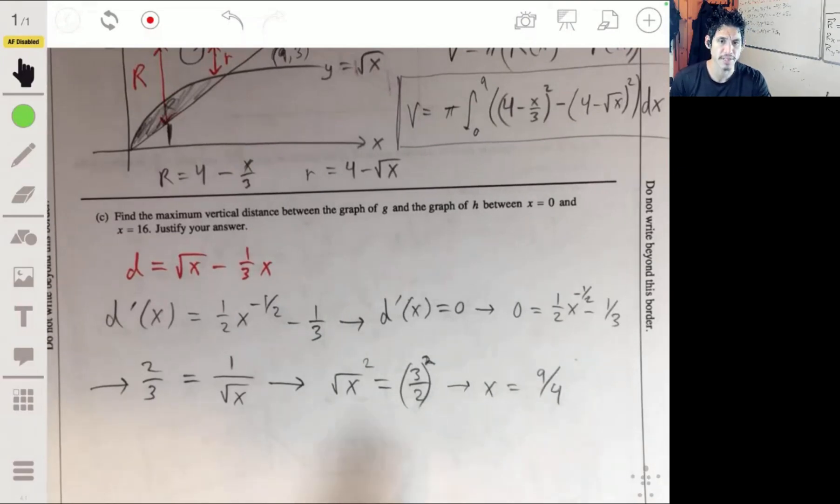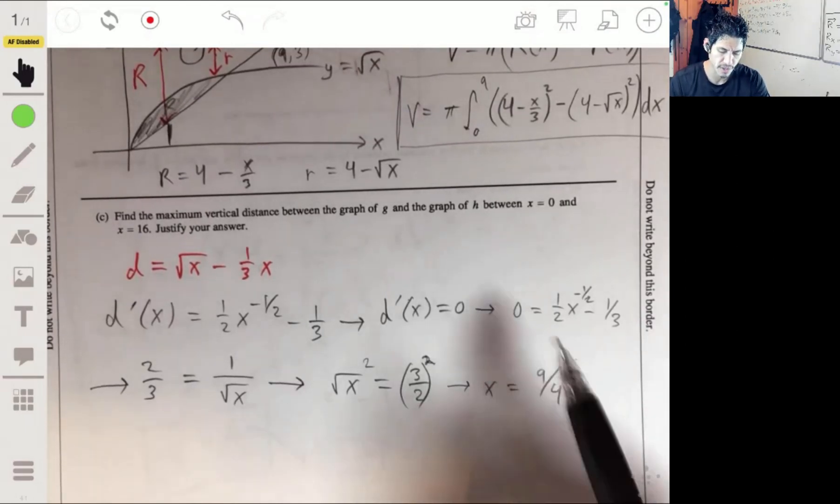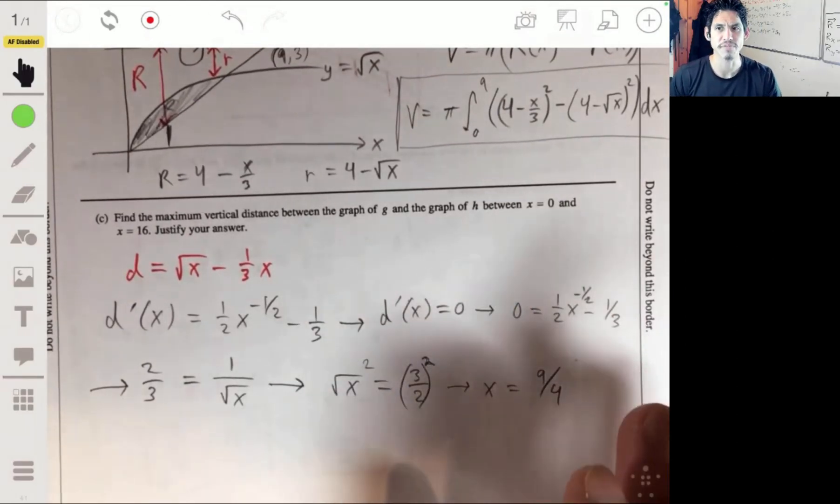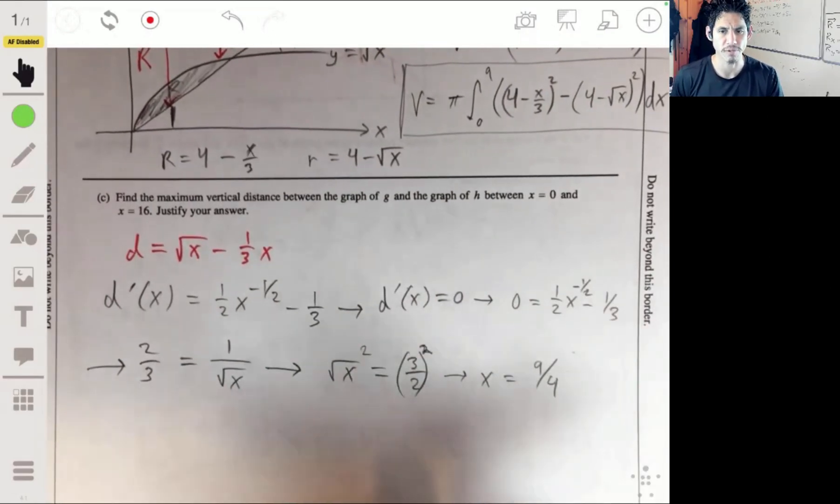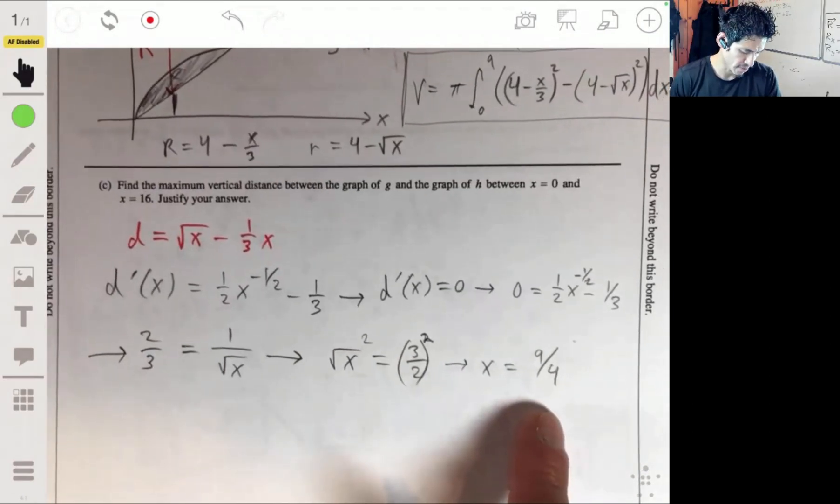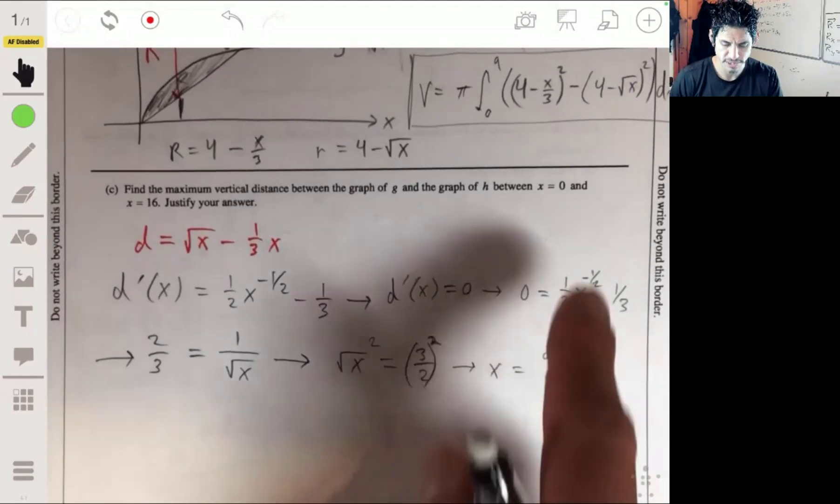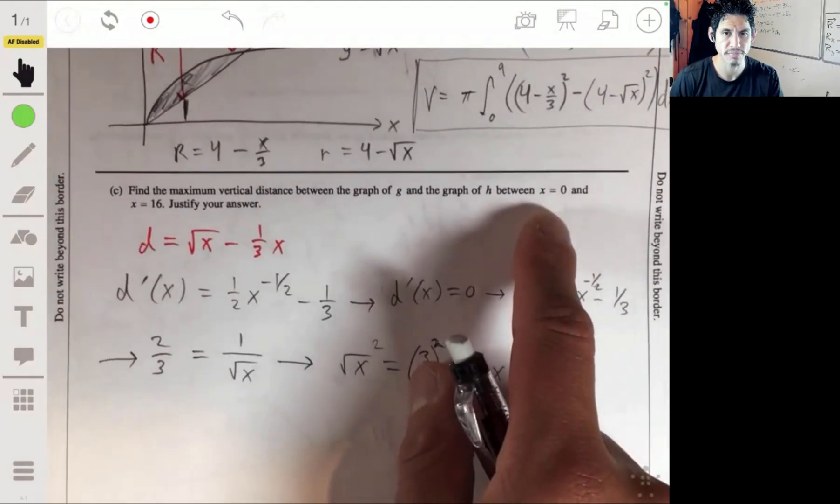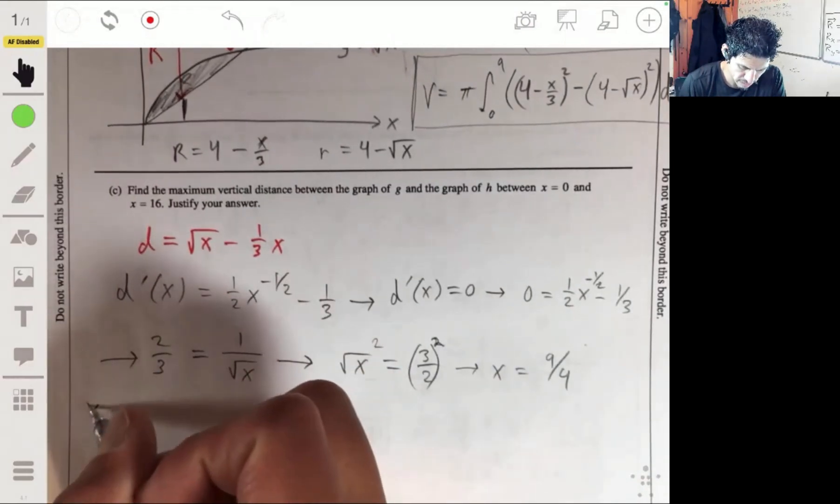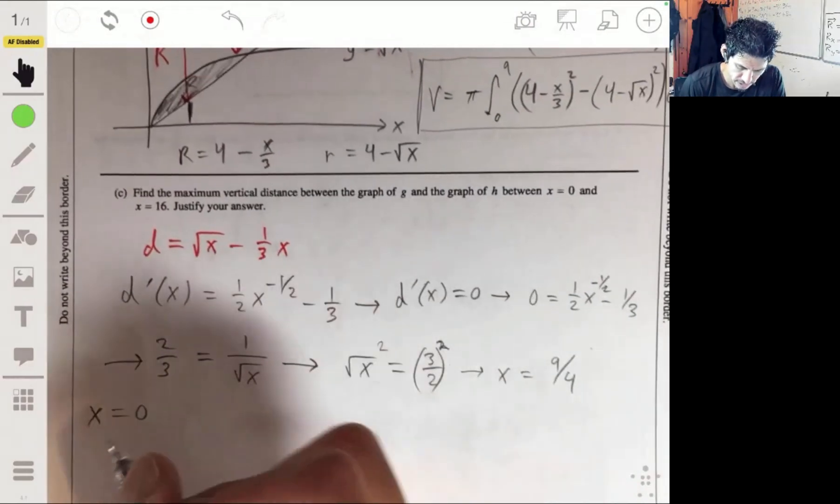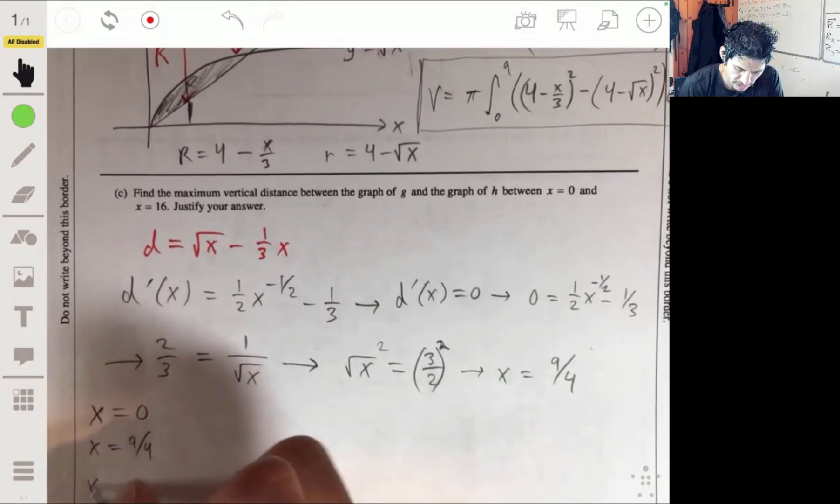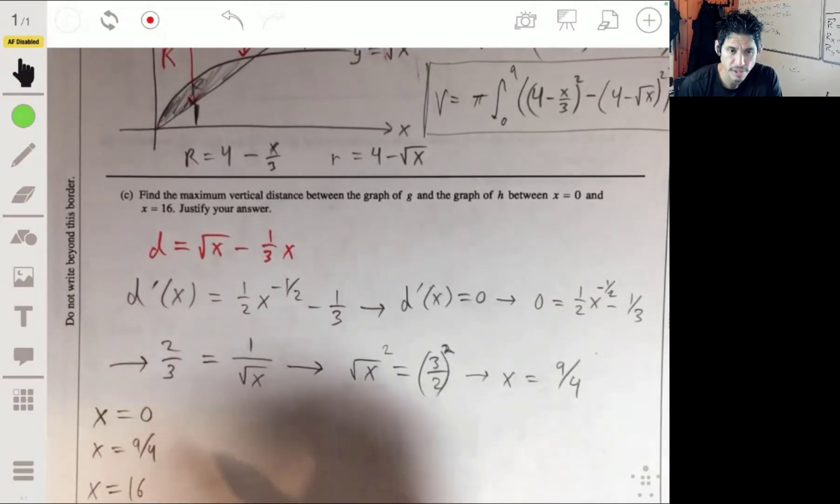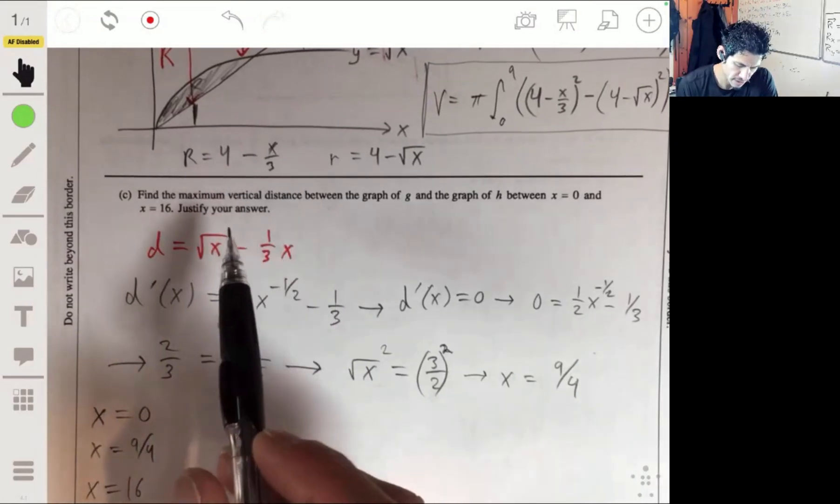So then now we just look, so that's where a possible maximum could occur when x equals 9 over 4. So then we check, we'll check this and we just need to check the endpoints. So we're going to check x equals 0, we're going to check x equals 9 over 4, and x equals 16. Plugging those into the equation for the distance.